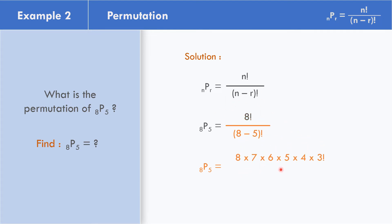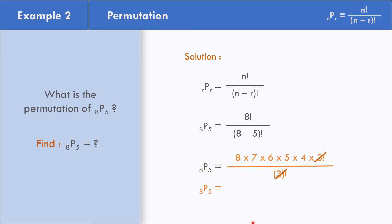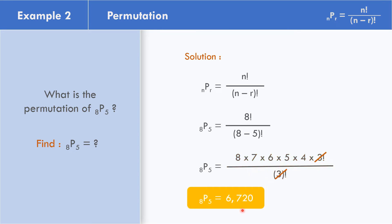So the factored form is 8 times 7 times 6 times 5 times 4, up to 3 factorial — because the denominator is 8 minus 5 equals 3 factorial. We cancel 3 factorial. Now we multiply: 8 times 7 is 56, times 6 is 336, times 5 is 1,680, times 4 is 6,720. So permutations of 8 objects taking 5 at a time equals 6,720.